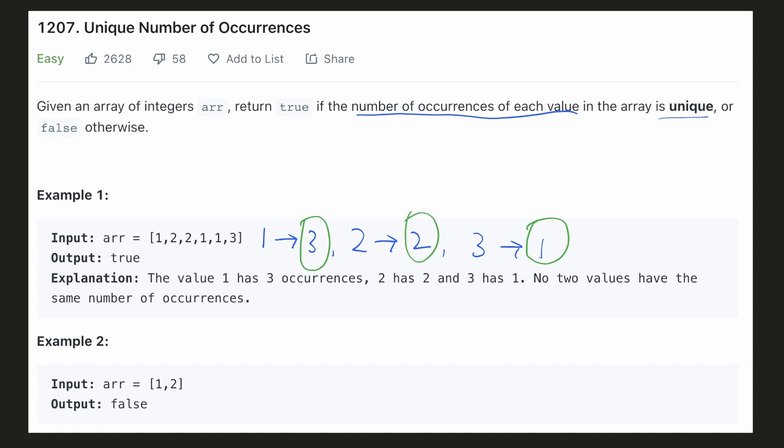In the second example, these are the frequencies corresponding to the numbers. Here, the frequency 1 is repeated 2 times, hence we return false.